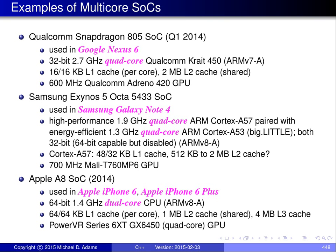Some examples of multicore SoCs — System on a Chip. The first is from Qualcomm, used in the Google Nexus 6: a 32-bit quad-core ARM-based processor with a GPU. The Samsung example, used in the Galaxy Note 4, has two quad-core ARM-based processors configured in a high-performance and energy-efficient arrangement along with a GPU. The Apple A8, used in the iPhone 6, is a 64-bit dual-core ARM-based processor, also with a GPU.